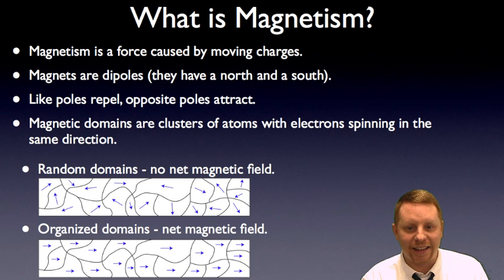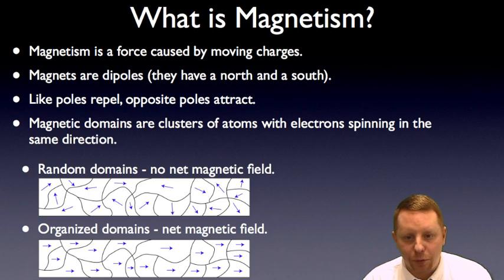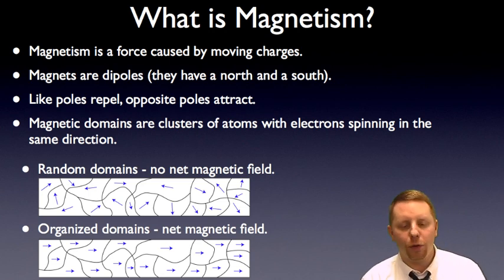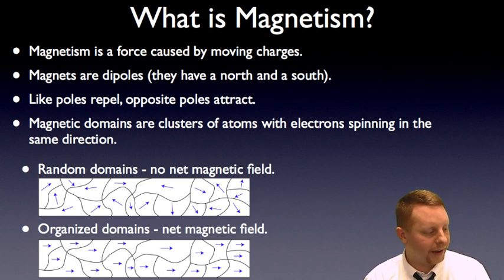So let's start by talking about magnetism. Magnetism is a force caused by moving charges. Magnets are dipoles. They have a north and a south. You can't find a north without a south. The theory of magnetic monopoles, having a north all by itself or a south all by itself, we just haven't found any yet. They don't exist in nature. Like poles repel and opposite poles attract.